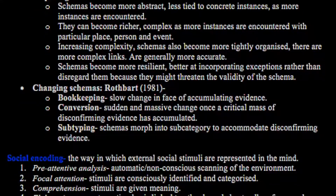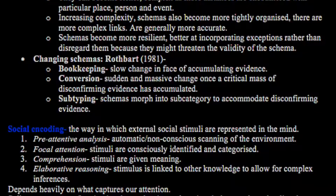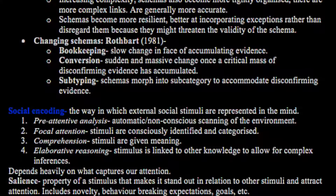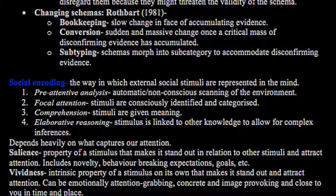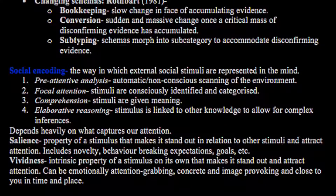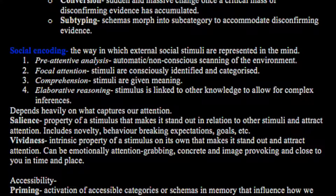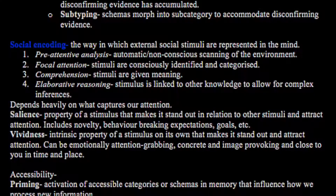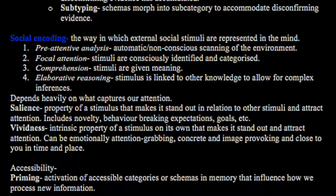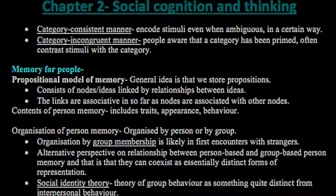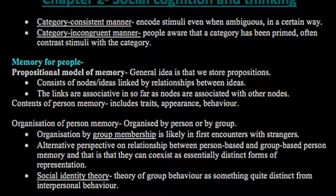Social encoding is the way in which we process external social stimuli and how they are represented in the mind. It includes pre-attentive analysis — the automatic, non-conscious scanning of the environment — focal attention, where stimuli are consciously identified and categorised, comprehension, which gives meaning to stimuli, and elaborative reasoning, where stimuli are linked to other knowledge to allow for complex inferences. These depend heavily on what attracts our attention. Salience is the property of a stimulus that makes it stand out relative to others, including novelty, behaviour breaking expectations, and goals. Vividness is the intrinsic property of a stimulus that makes it stand out — it can be emotionally attention-grabbing, concrete, and close in a particular context. Accessibility, like priming, is the activation of accessible categories or schemas in memory that influences how we process new information. There is a category-consistent manner — encoding stimuli even when ambiguous in a certain way — and a category-incongruent manner, where people are aware a category has been primed, often contrasting with a different stimulus within the category.